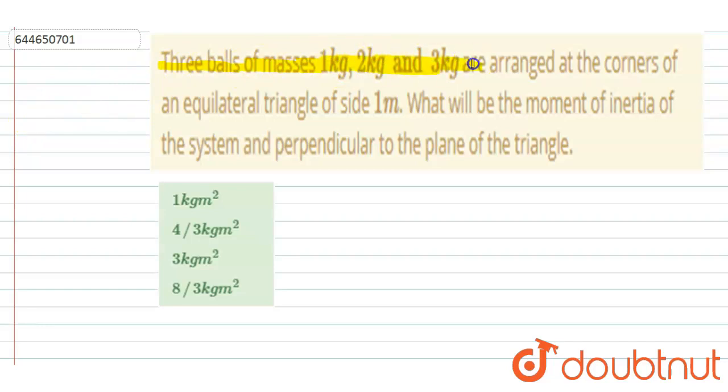...1kg, 2kg and 3kg are arranged at the corners of an equilateral triangle of side length 1 meter. What will be the moment of inertia of the system perpendicular to the plane of the triangle?